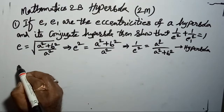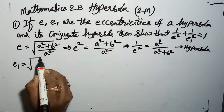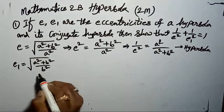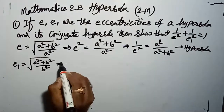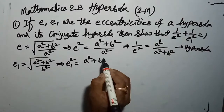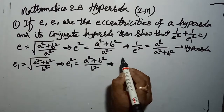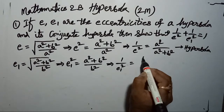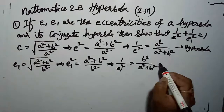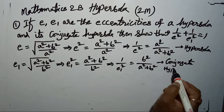Next, for the conjugate hyperbola, E₁ = √((A² + B²) / B²). Squaring both sides, E₁² = (A² + B²) / B². Taking the reciprocal, 1/E₁² = B² / (A² + B²). This is for the conjugate hyperbola.